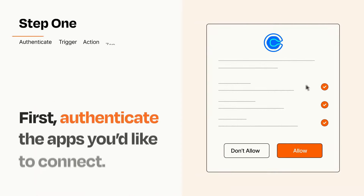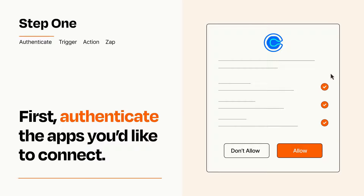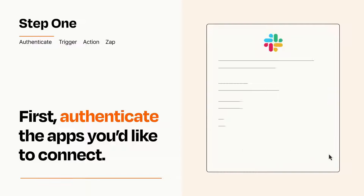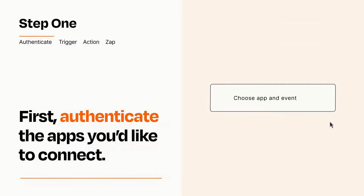It's easy. To get started, you'll just need to authenticate your apps, which takes just a few seconds. Zapier meets industry standards for encryption when connecting with each of your apps.